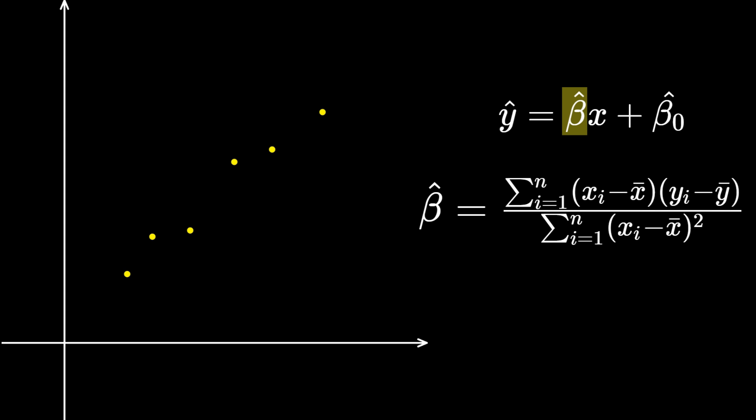To understand it intuitively, let's draw a vertical line x equals x-bar, where x-bar is the average value of all the x-coordinates, and a horizontal line y equals y-bar, where y-bar is the average value of all the y-coordinates. Let's consider this point x1, y1. The distance between this point and the line x equals x-bar is x1 minus x-bar. Likewise, its distance to the line y equals y-bar is y1 minus y-bar.